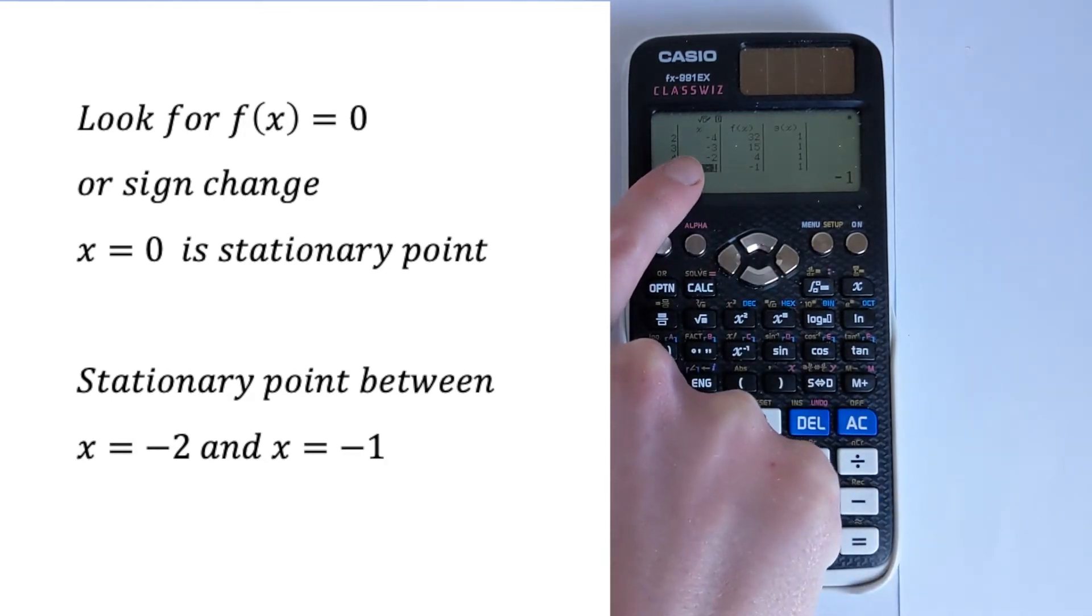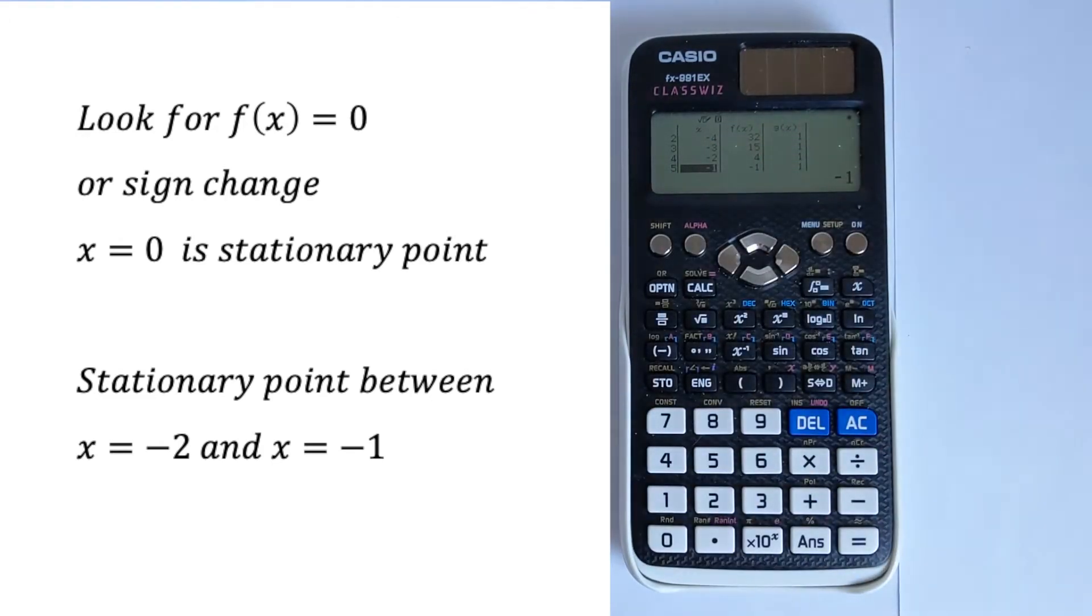Then there's a change of sign that occurs between x equals -2 and -1. You can see it going from 4 to -1. So there's a stationary point somewhere between x equals -2 and -1.